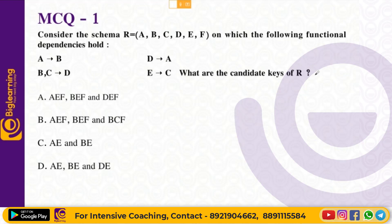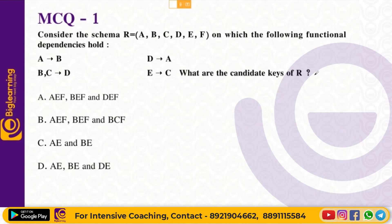A candidate key is a single key or group of keys that uniquely identifies the rows in a table. More precisely, a candidate key is the minimal super key. To find the candidate key, we have to calculate the closure.